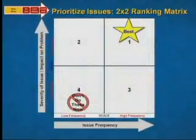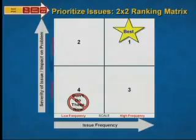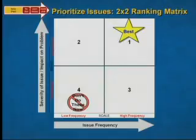If you have a lot of feedback like that and you're trying to figure out what to do with it next, you can use this 2x2 ranking matrix to categorize or prioritize them based on the impact or severity of the problem and the frequency of the event.